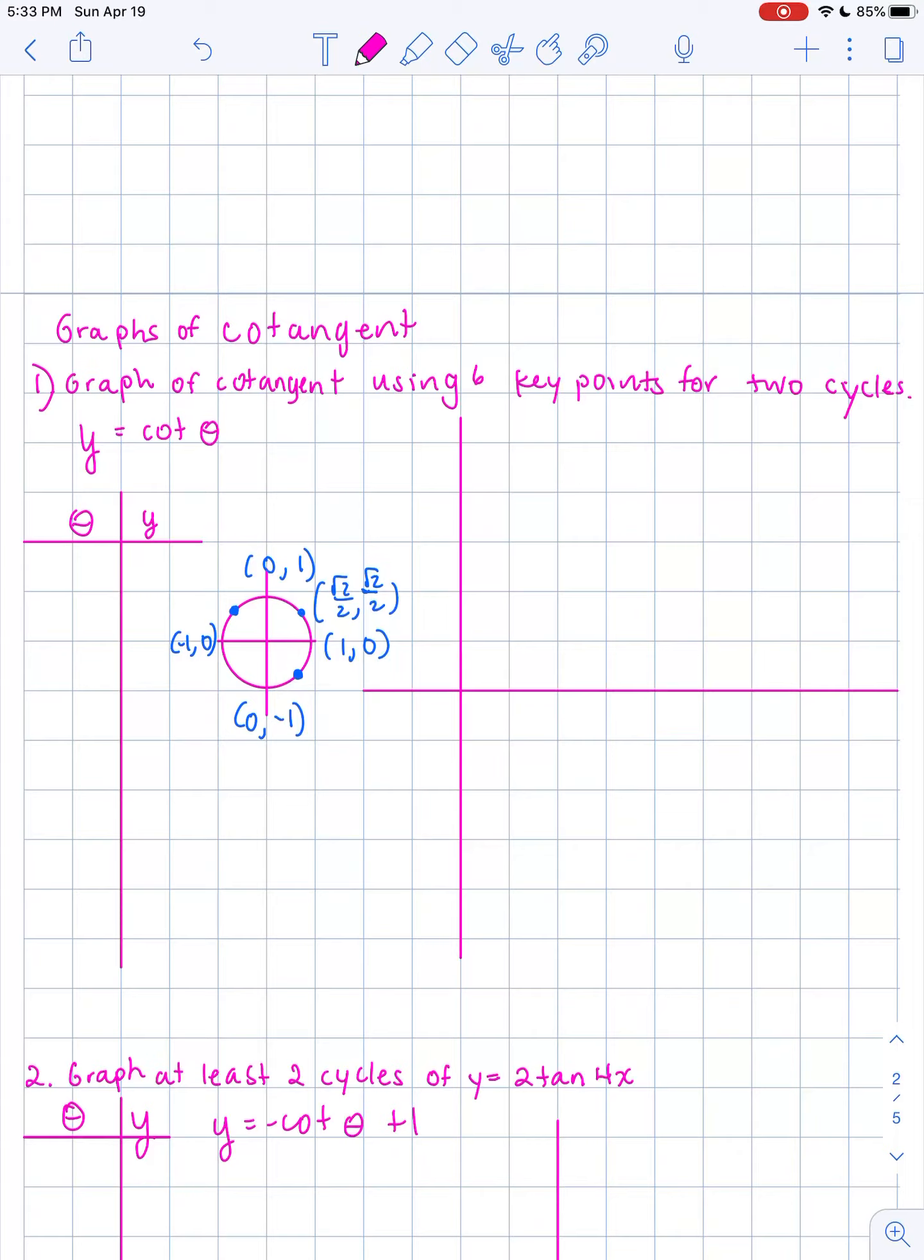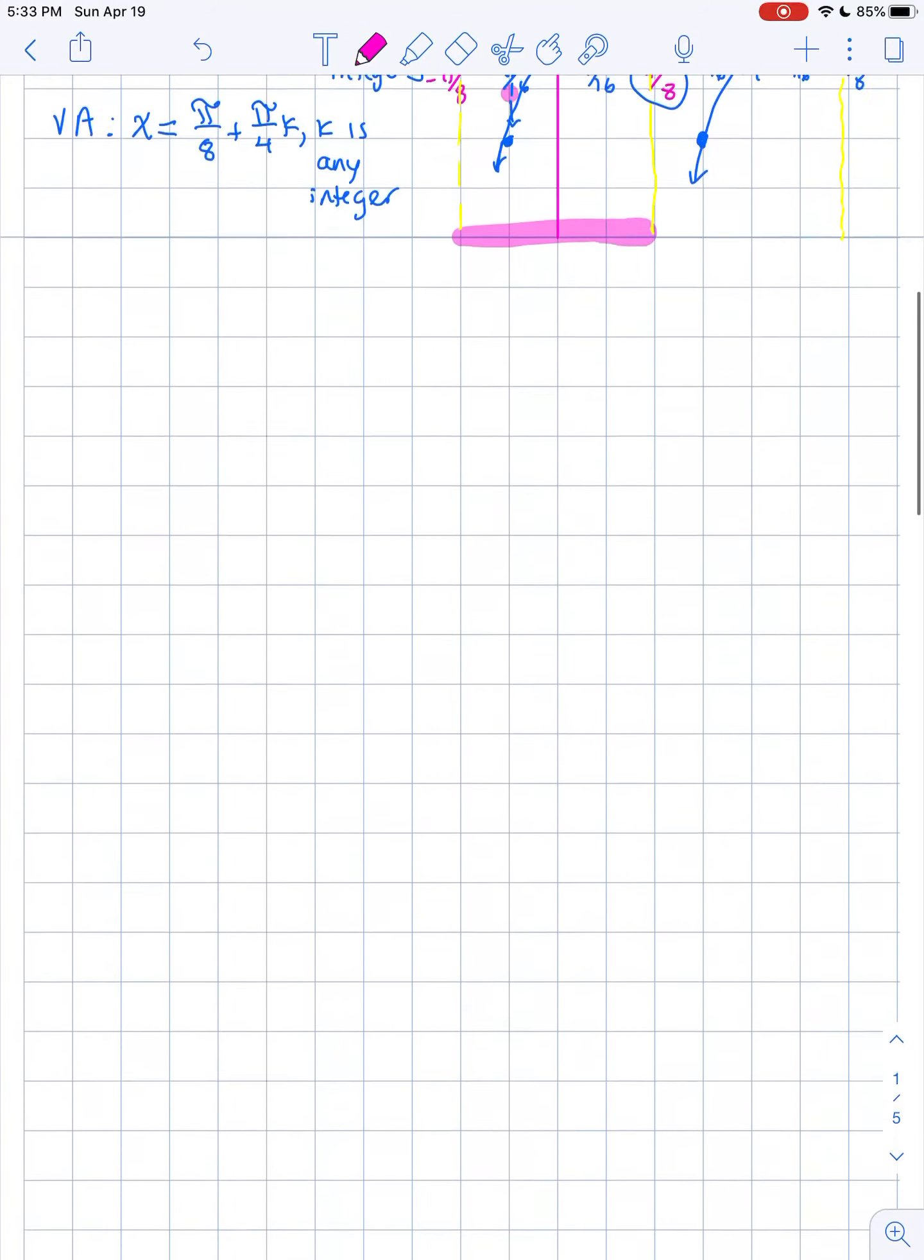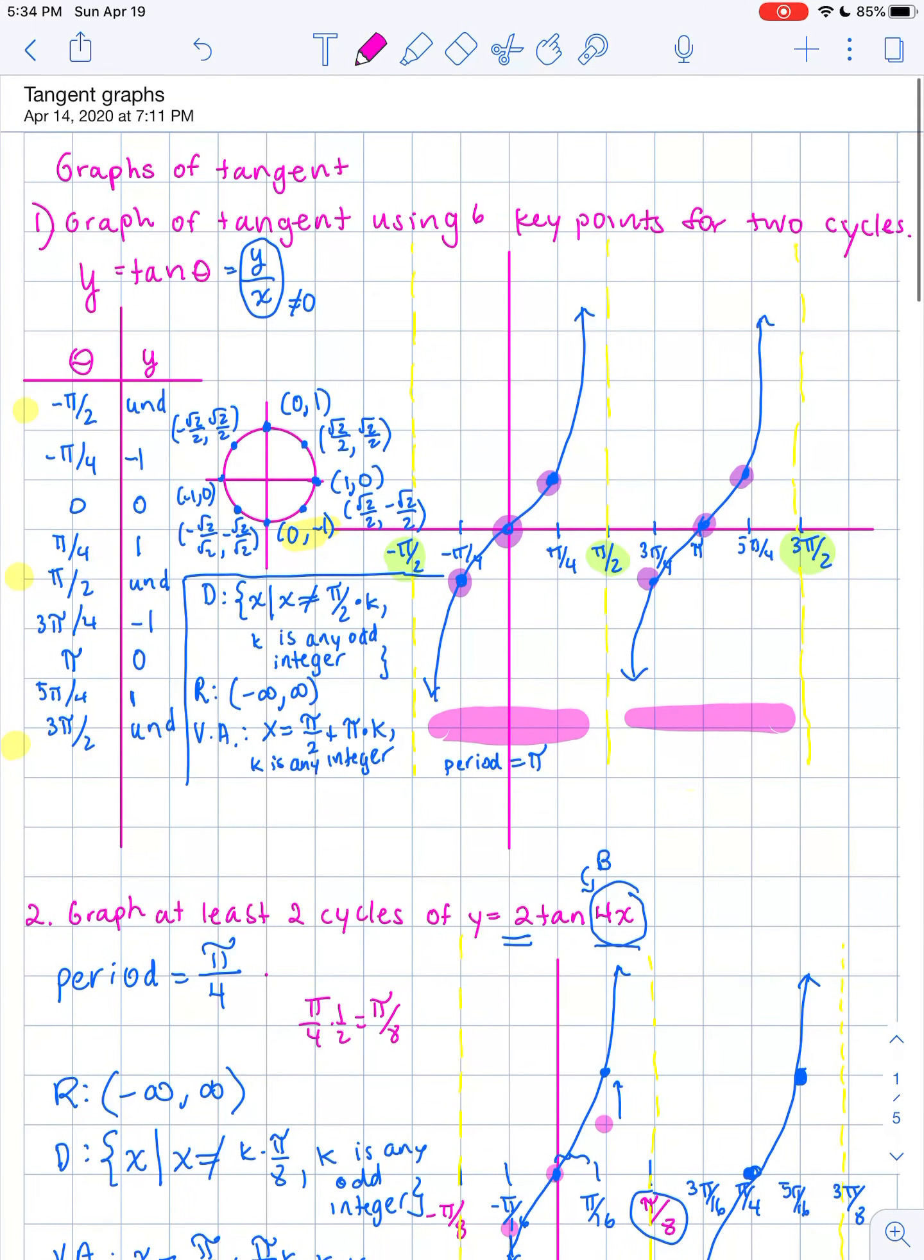Just to refresh your memory, tangent started at negative π over 2 on my graph and then went to π over 2 and then eventually to 3π over 2.